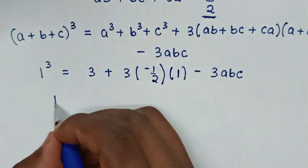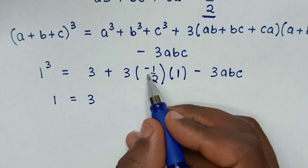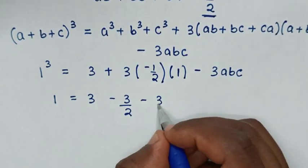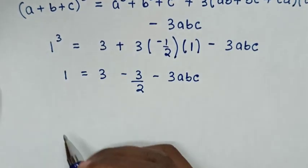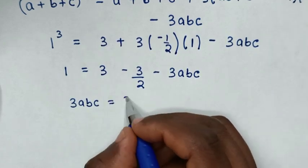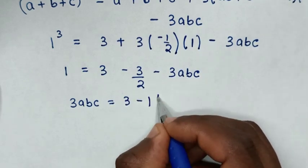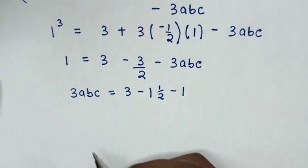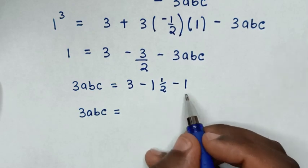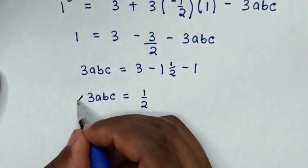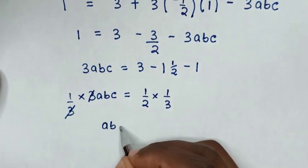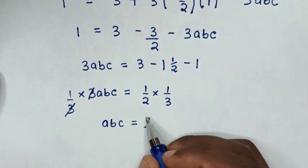1³ equals 1, so 1 equals 3 plus 3 times negative 1/2 times 1, which is negative 3/2, minus 3ABC. We take negative 3ABC to the left side, giving 3ABC equals 3 minus 3/2 minus 1, which simplifies to 3 minus 1 and a half minus 1 equals one half. Multiplying both sides by 1/3, the 3s cancel, giving ABC equals 1/6.